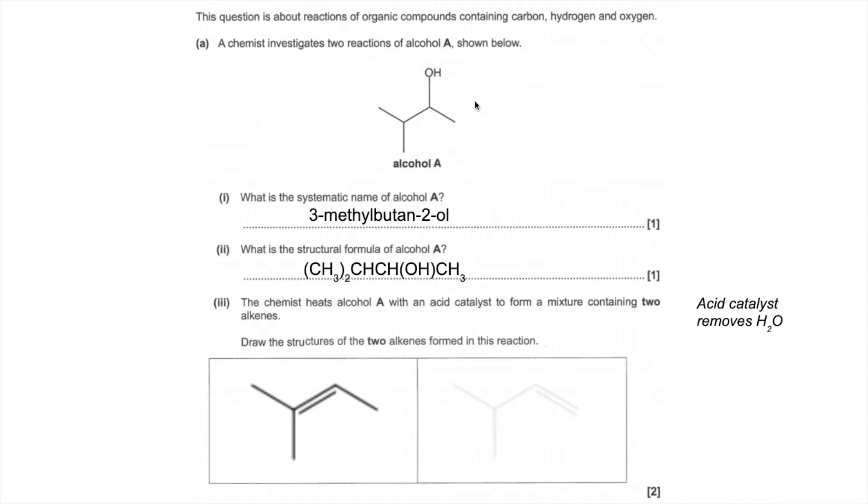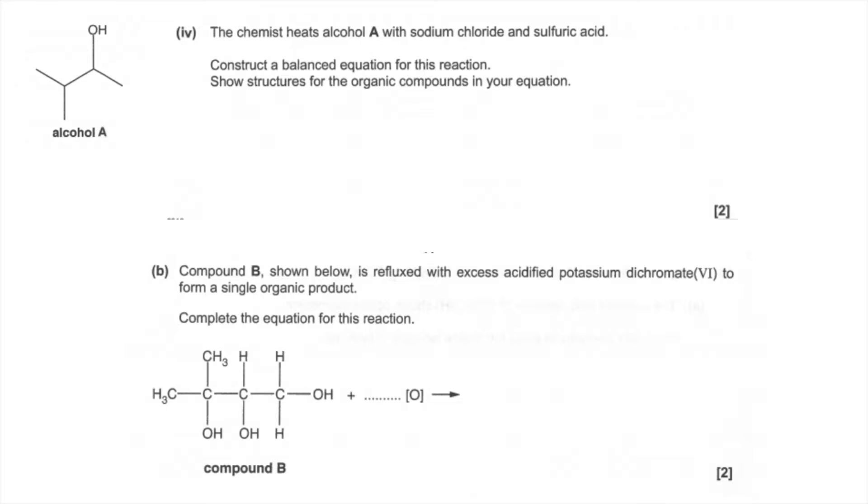So two possible answers are those. And the last part of A, chemist heats the alcohol with sodium chloride and sulfuric acid. So this combination here generates HCl in situ, and then the Cl substitutes for the OH group, so the balanced equation starts with that and the products are those. So moving on to part B, we've got compound B.